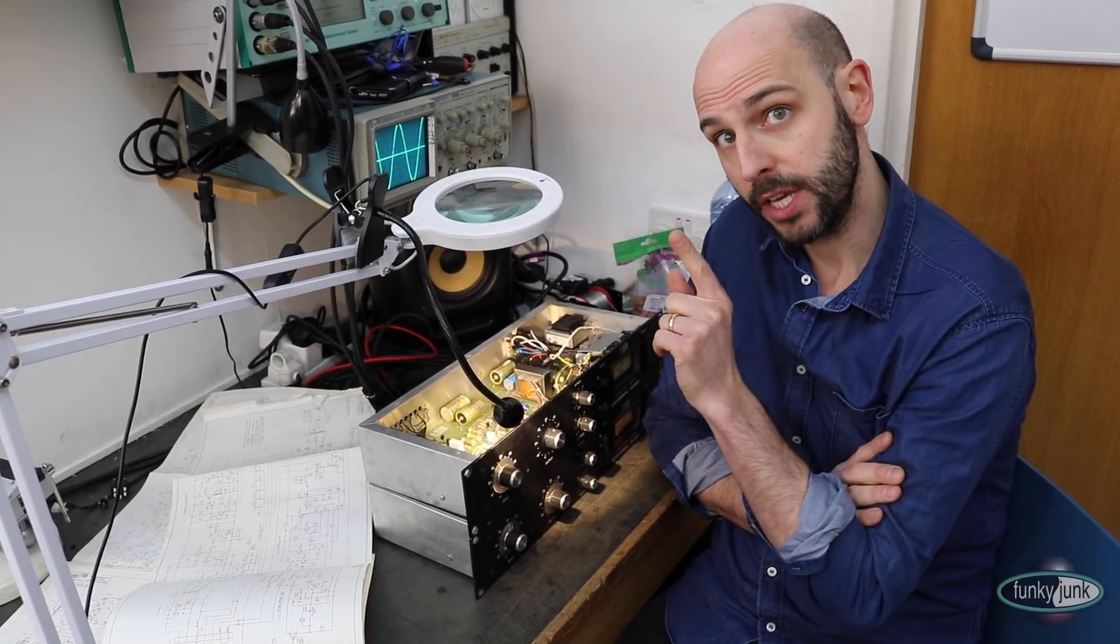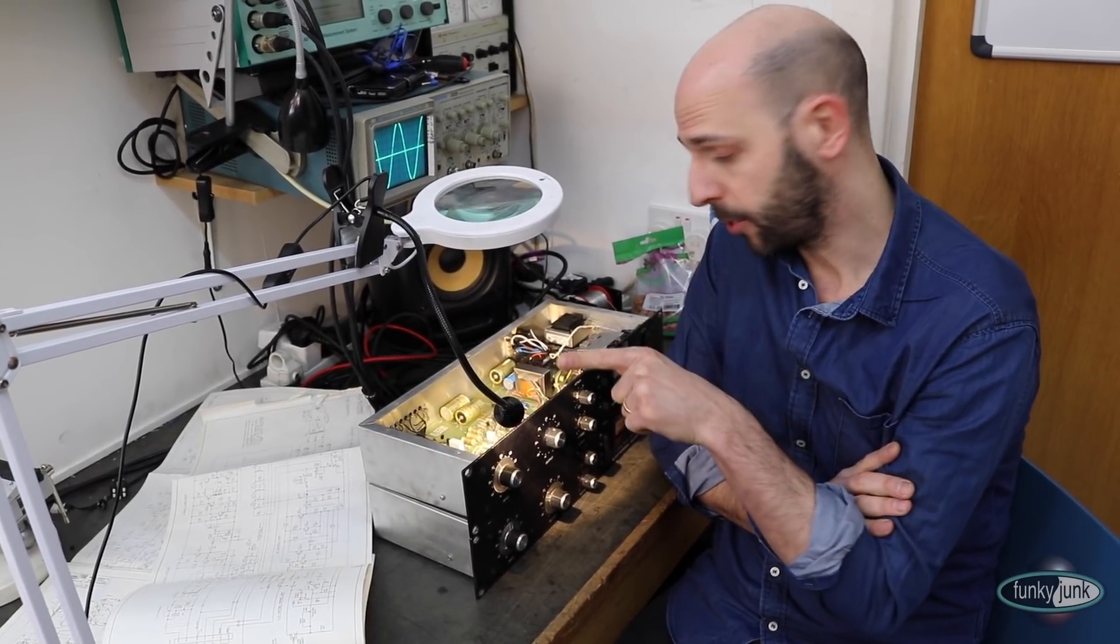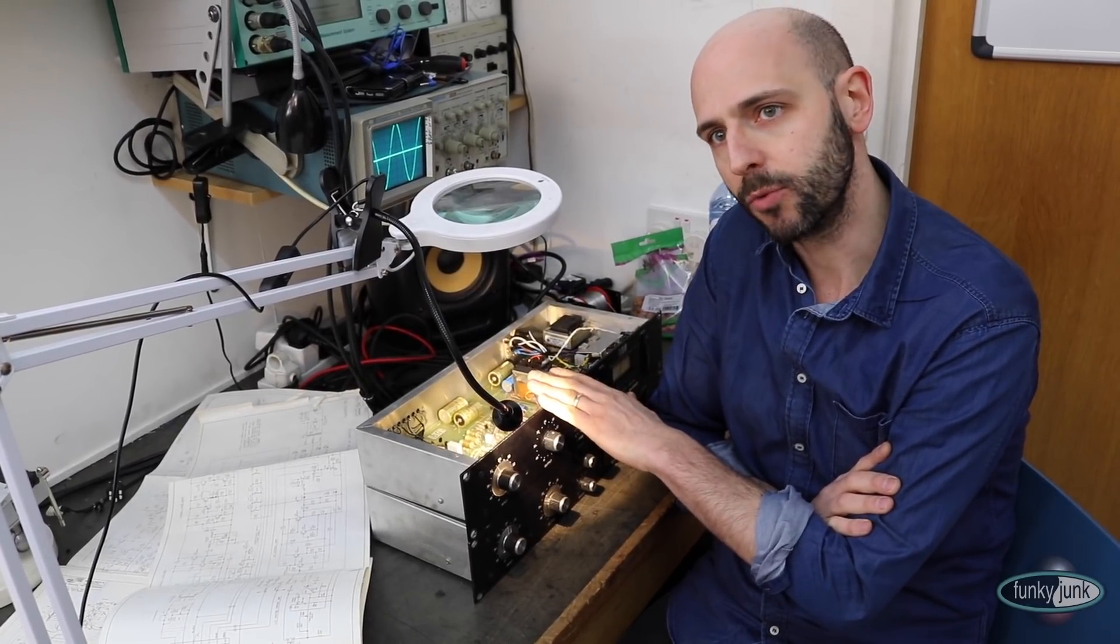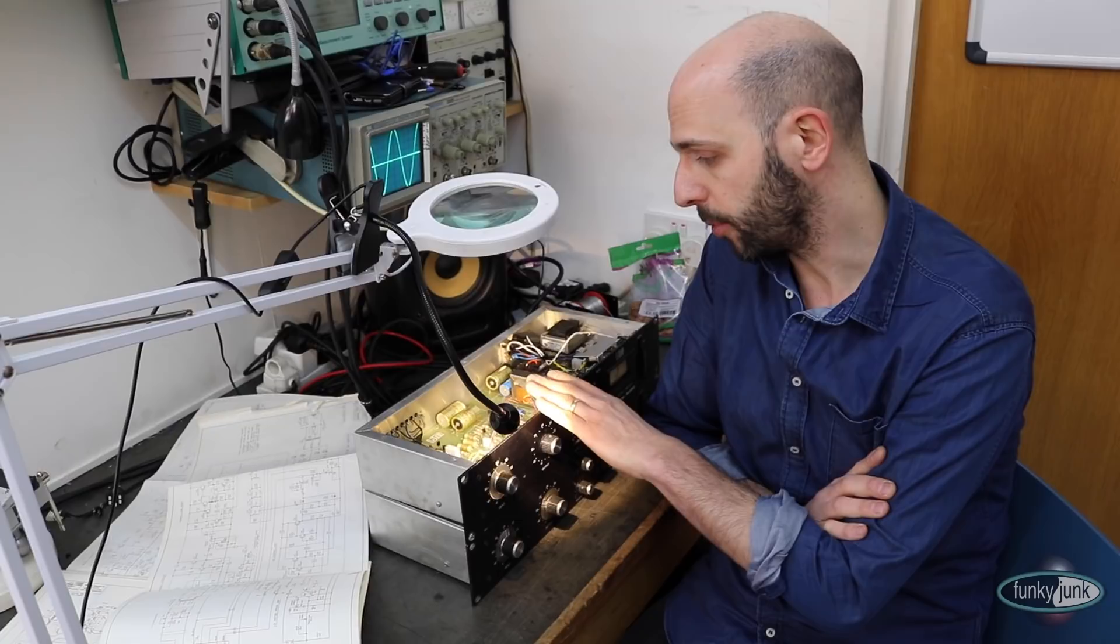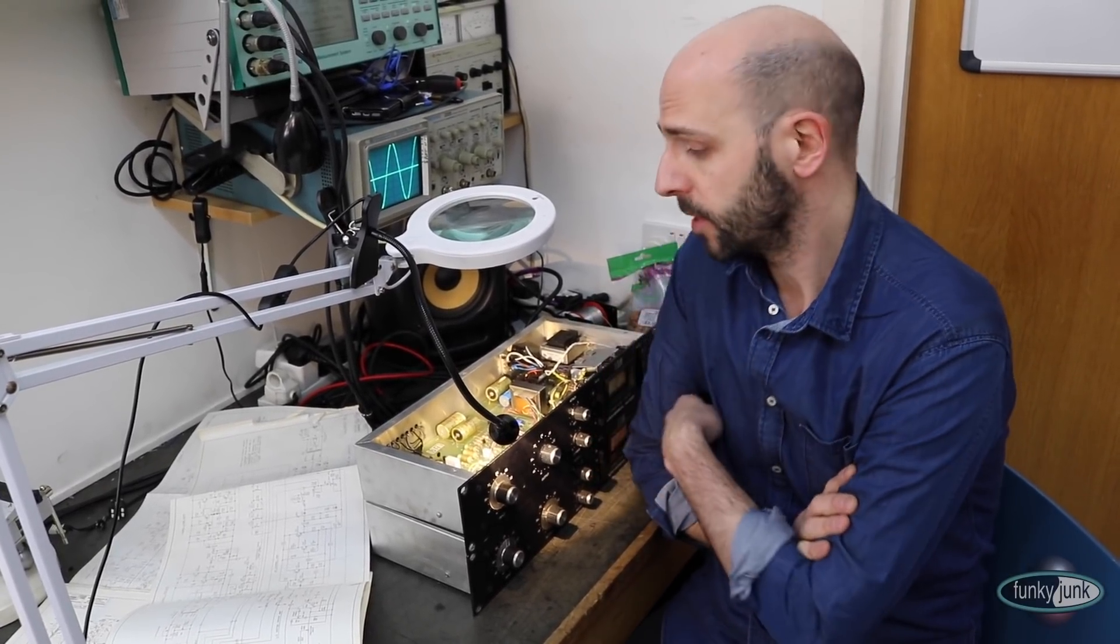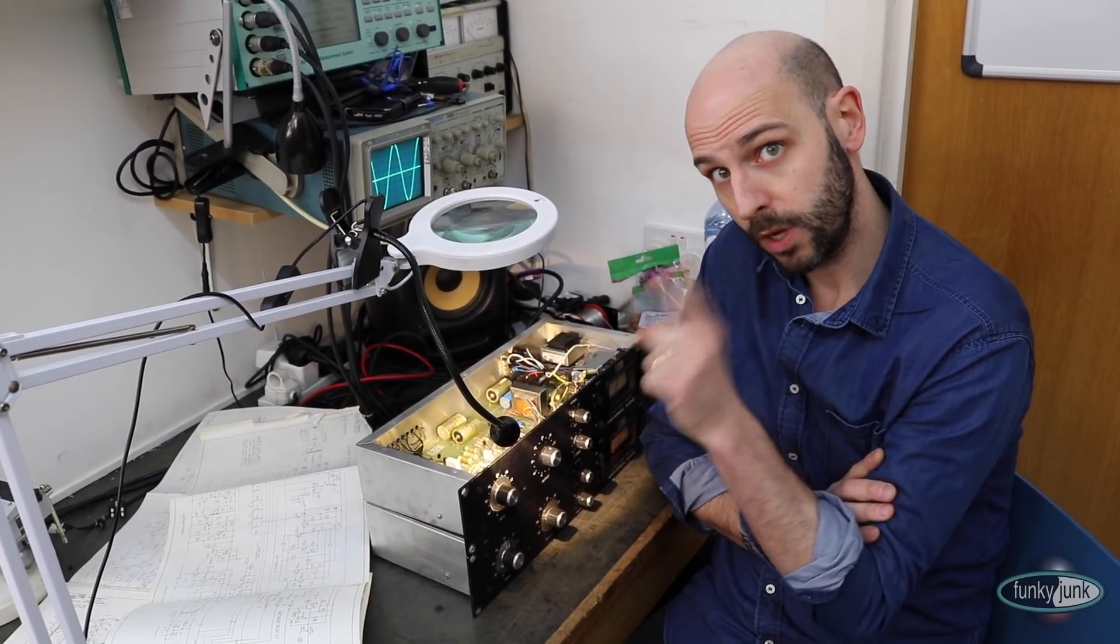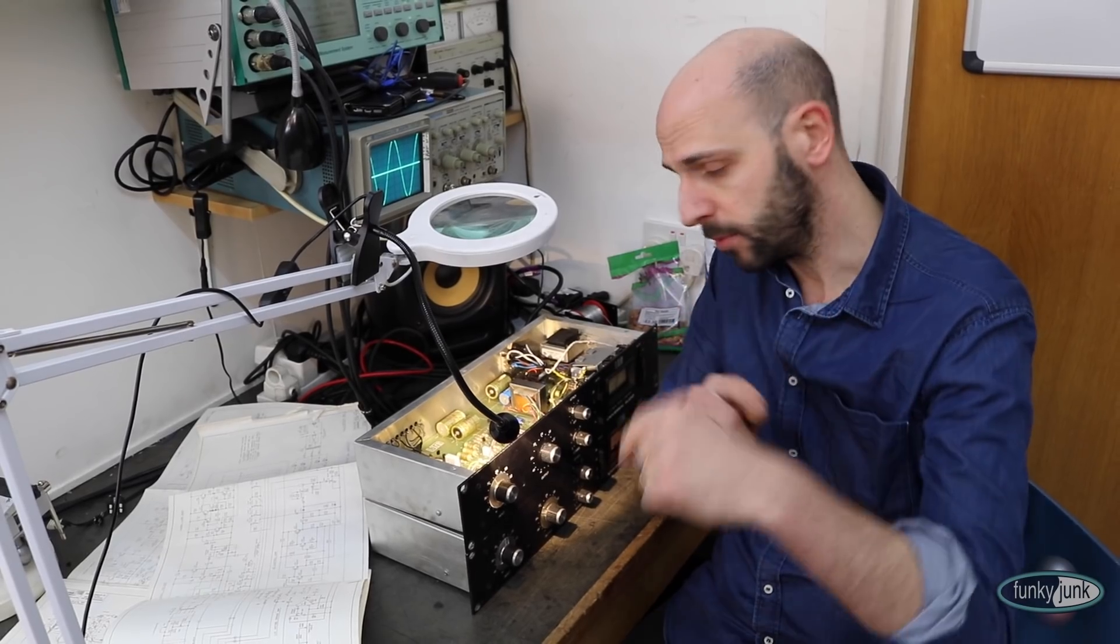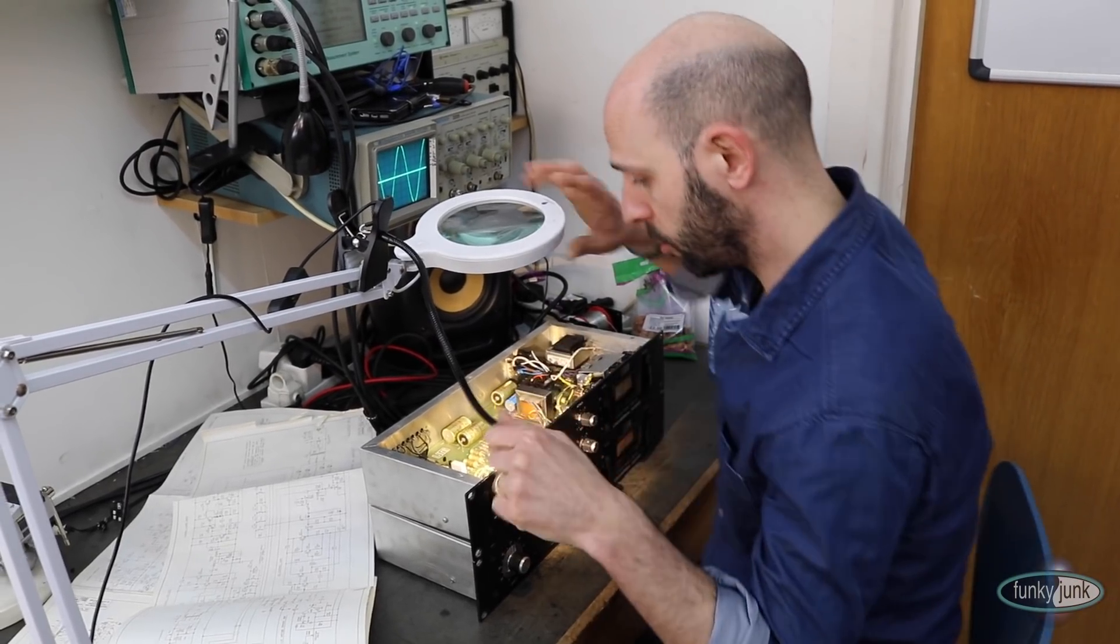This is a very specific case because this is the first one that they had that was class AB output. All the others up to revision E were class A output—so that one transistor driving the output transformer—whilst this one has got two in push-pull. If you come closer, I'll show you.